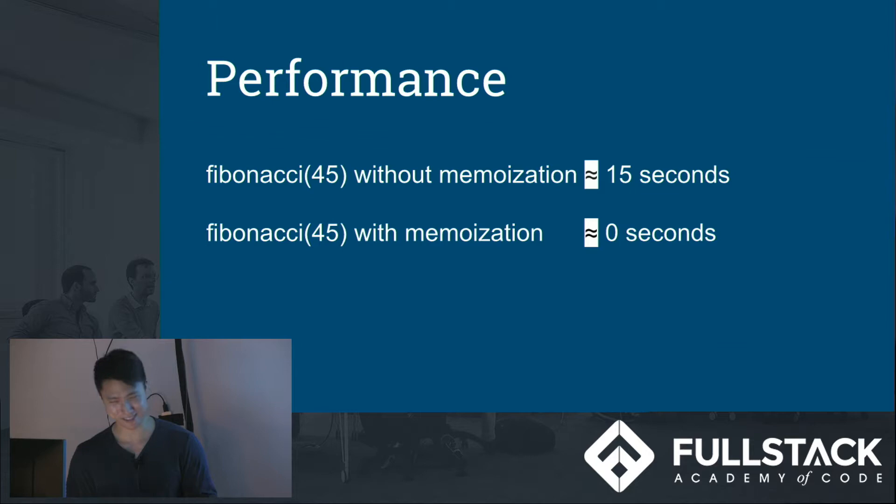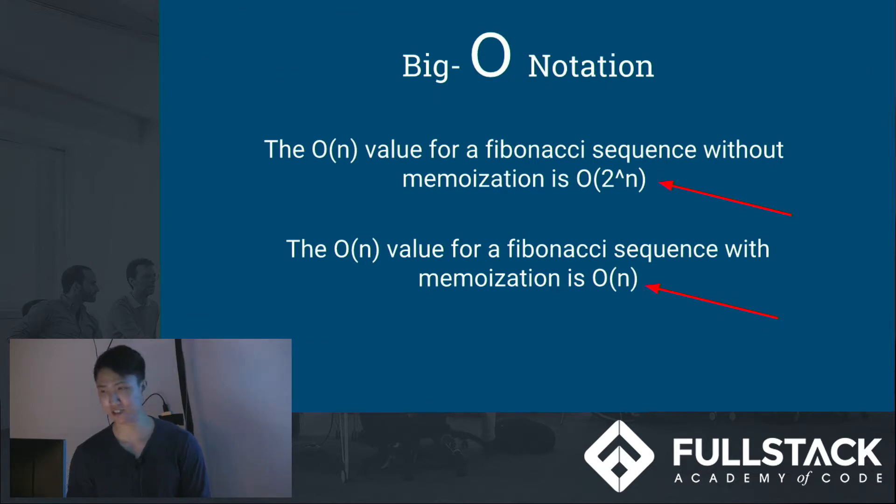I mean, I was going to do a graph, but zero and like 15 seconds doesn't really work out well. So, why does it change so much? That's because there's a shift in the big O notation. The time-space complexity. The O(n) value for a Fibonacci sequence without memoization is O(2^n). It's actually a little bit less than that, because Fibonacci itself, the fib of 1 and fib of 0 is a fixed value. You don't really have to calculate that, but for our purposes, all intents and purposes, this will work. And then the O(n) value for a Fibonacci sequence with memoization is just O(n).